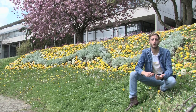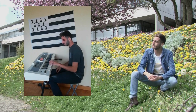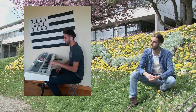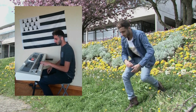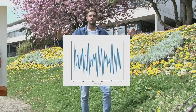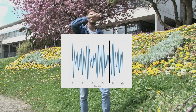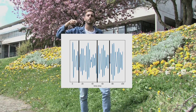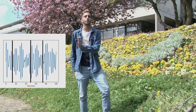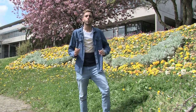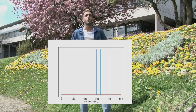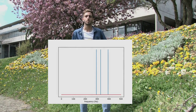In order to understand how we can decrease the number of measurements, let's make an analogy with sound. Let's play a C chord. Here is the signal as a function of time — it has many values to measure. But if we represent the signal in the frequency domain, there are only a few values that are not zeros. This is what we call a sparse signal.